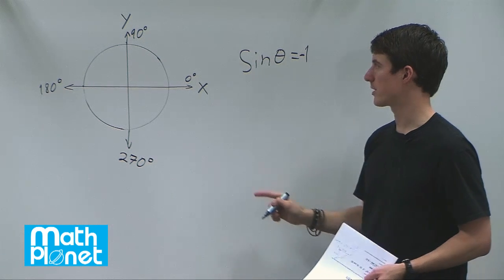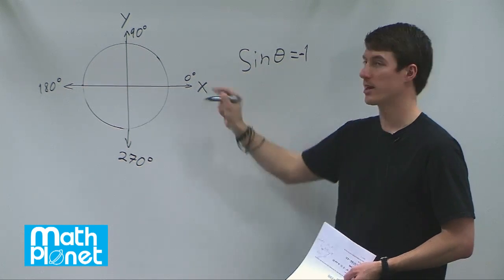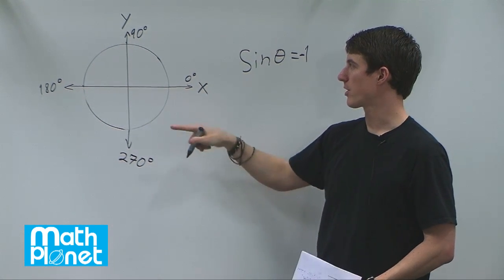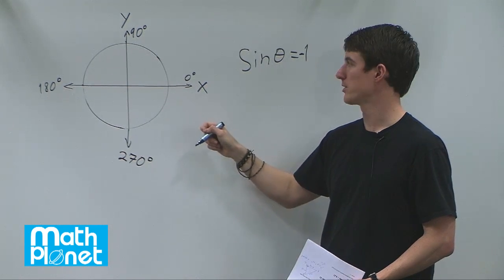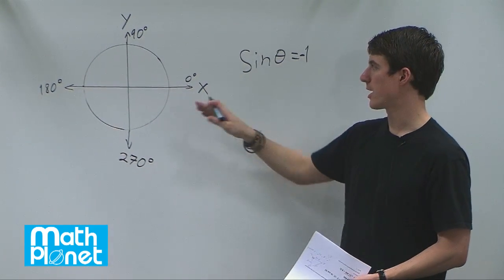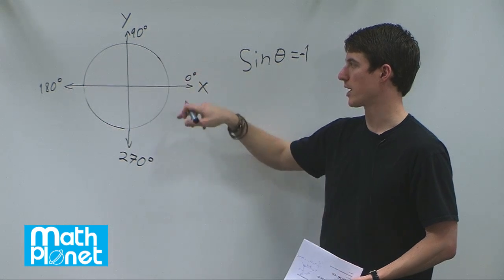How we want to do that is to think about what sine is in the unit circle. Sine is opposite over hypotenuse. The hypotenuse is always one in the unit circle, so we're just talking about the opposite side.